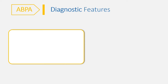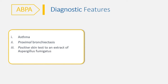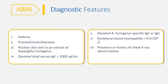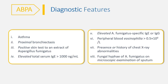Diagnostic features of ABPA include asthma in the majority of cases, proximal bronchiectasis, positive skin test for an extract of Aspergillus fumigatus, elevated total serum IgE greater than 1000 nanogram per milliliter, elevated Aspergillus fumigatus specific IgE or IgG, peripheral blood eosinophilia greater than 0.5, presence or history of chest x-ray abnormalities, and fungal hyphae of Aspergillus fumigatus on microscopic examination of sputum.